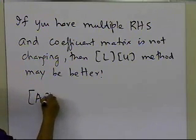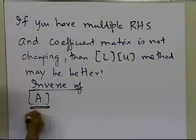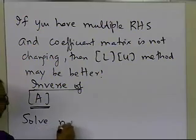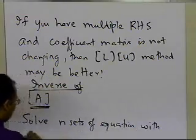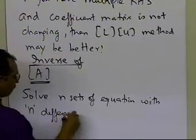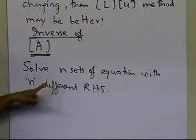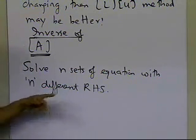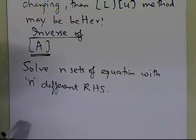If you are trying to find the inverse of A, you will have to solve n sets of equations with n different right-hand sides. That means only the right-hand side will be changing when you are trying to find the inverse of A — your coefficient matrix is not going to change. So how does that make LU decomposition method a better method to use than Gaussian elimination? Let's go ahead and see how that works.